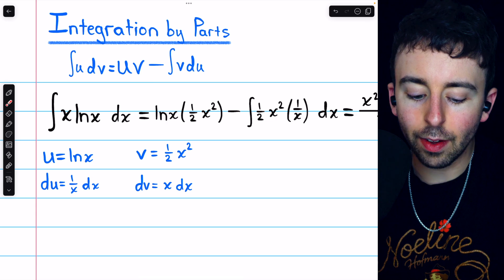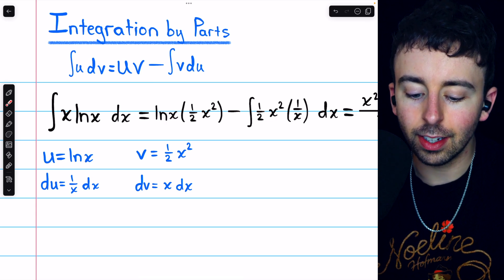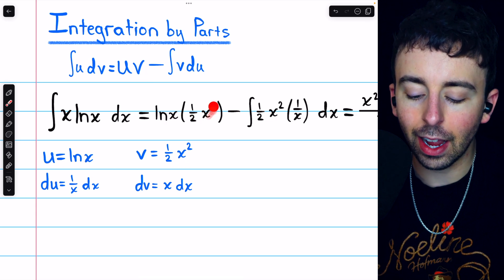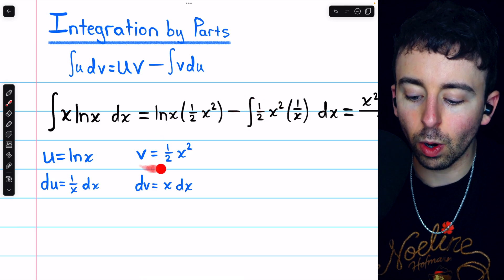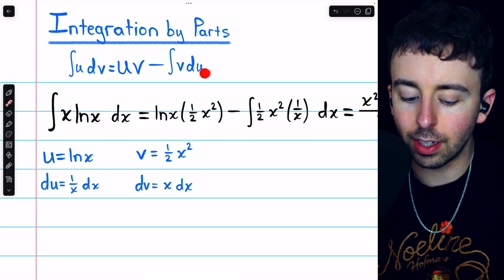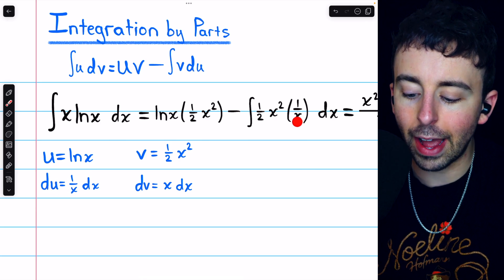So, applying this formula, we have u, which is ln(x), times v, which is 1 half x squared. Then, we must subtract the integral of v, which is 1 half x squared, times du, which is 1 over x dx.